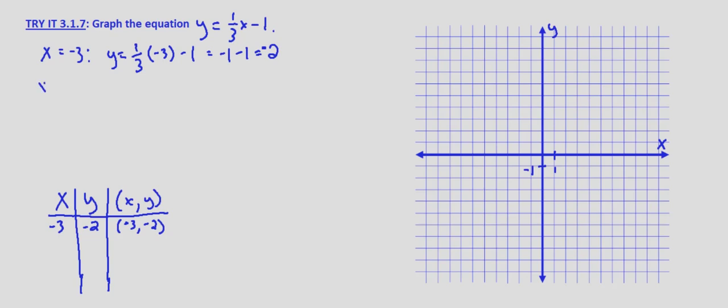Now we'll use 0 because anything times 0 is 0. So y equals one-third times 0 minus 1, which equals 0 minus 1, which equals negative 1. So x equals 0, y equals negative 1, which yields the point 0, negative 1.